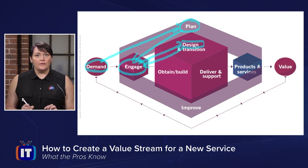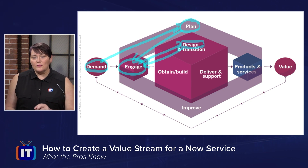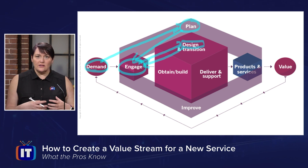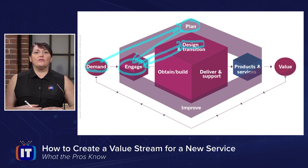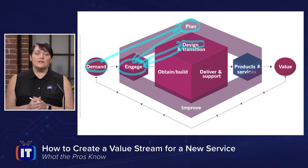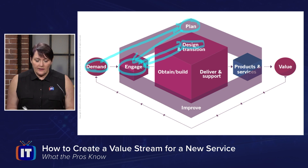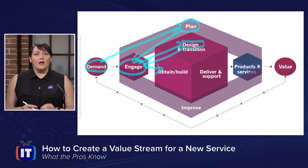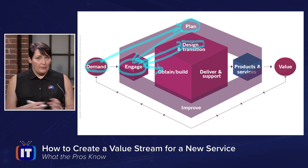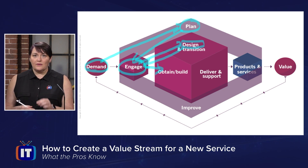Once we have our service designed, we move back to engage — going back to our stakeholders. This includes not just our users and customers, but also our external stakeholders. We go to our customers and ask, 'Is this really what you wanted? This is what we've designed.' And to our external stakeholders, we say, 'This is what we need from you.' Then we make a decision based on feedback: are we going to obtain from an external stakeholder, or are we going to build something new?